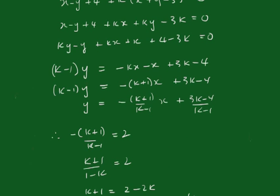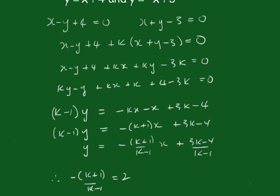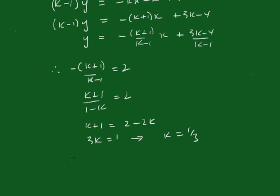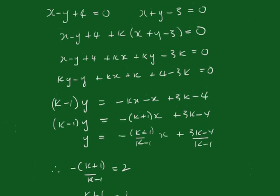Now we go back and we put that back into that equation. So we're going to have x - y + 4 + 1/3 into (x + y - 3) = 0.